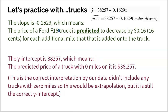Let's go back to our truck problem. The slope was negative 0.1629. I take that and put it over 1 — 1 is the x, 0.1629 is the y. When the mileage on a truck — that's x — goes up by one mile, I predict the price of that truck to go down by $0.16, which is 16 cents. You can also say: I predict the price of a Ford F-150 truck to go down by 16 cents for each additional one mile added onto the truck. Make sure you have units, the word 'predicted,' and context.